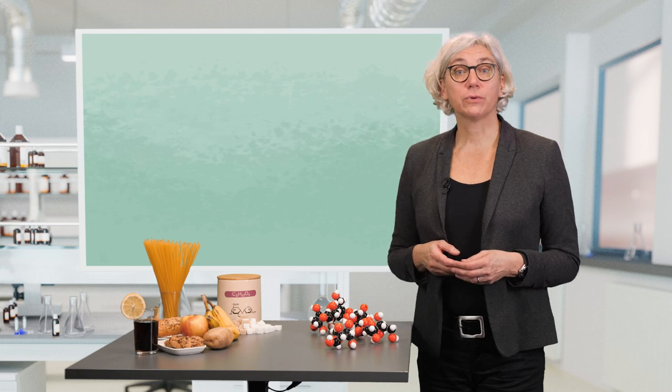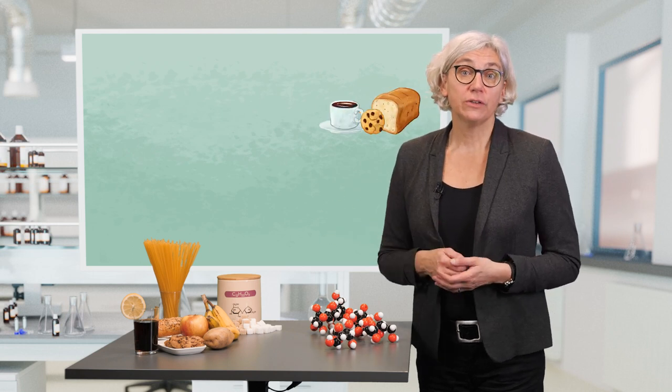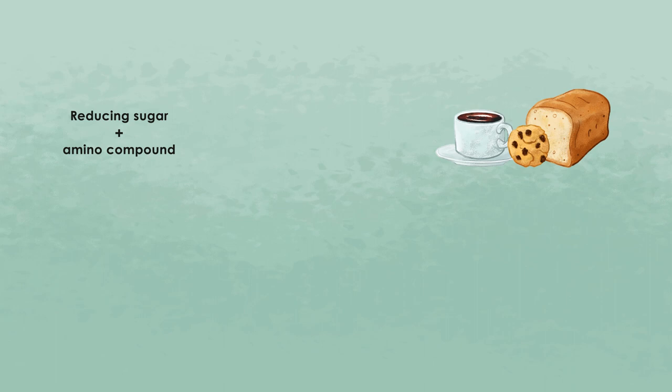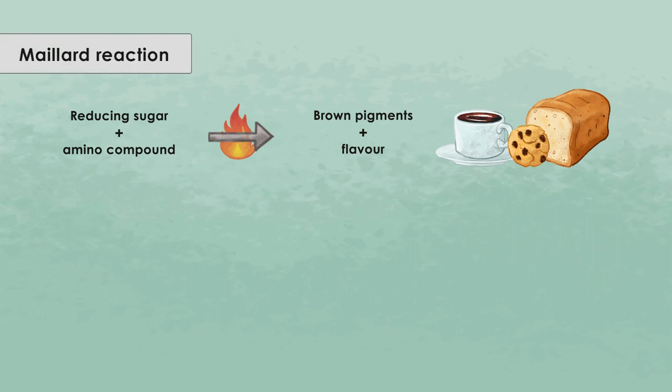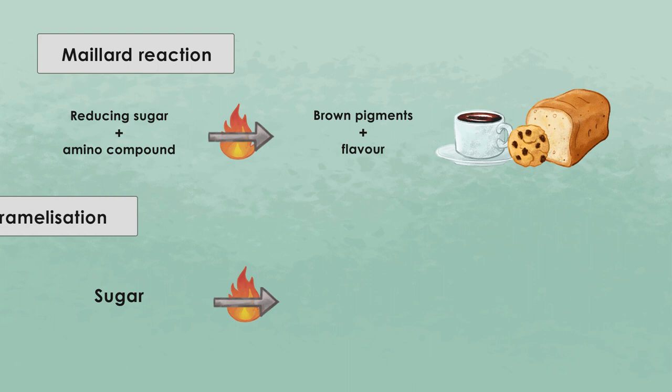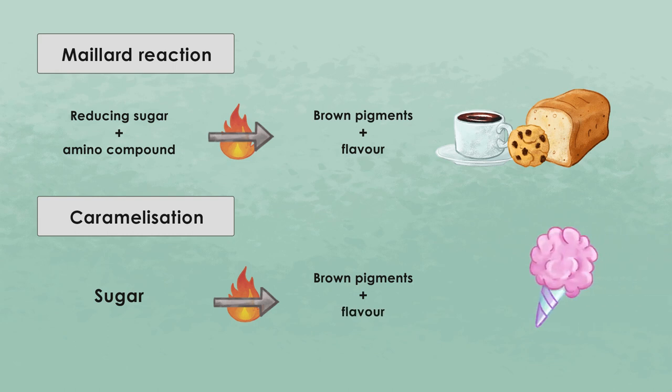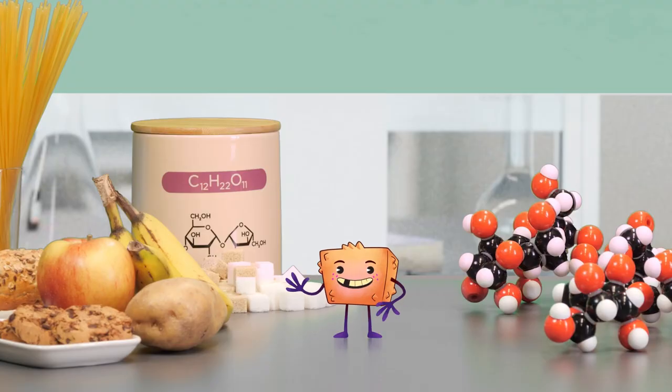When we produce thermally treated products, such as these biscuits here, sugar together with amino acids from the raw materials also plays an important role for the formation of the pleasant, roasty baking aroma, as well as of the nice brown color of the biscuits. These reactions that are responsible for this behavior are summarized by the Maillard reaction.